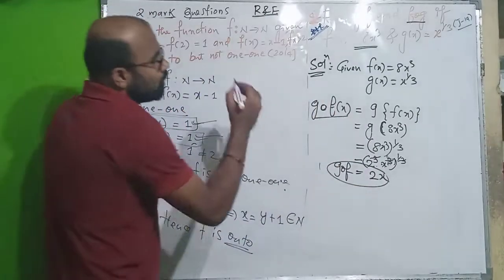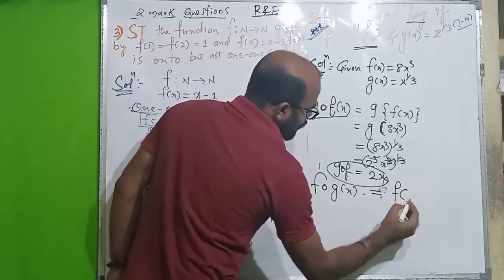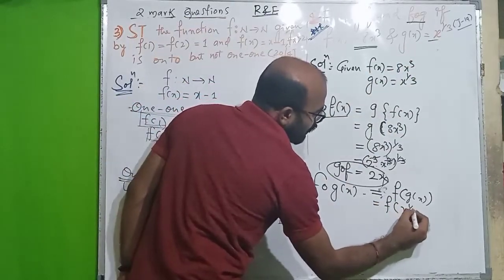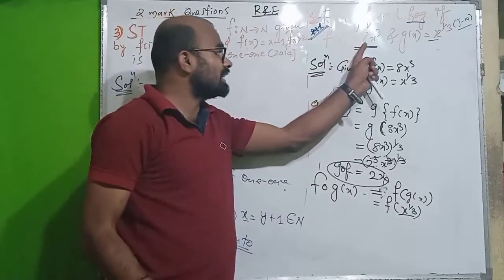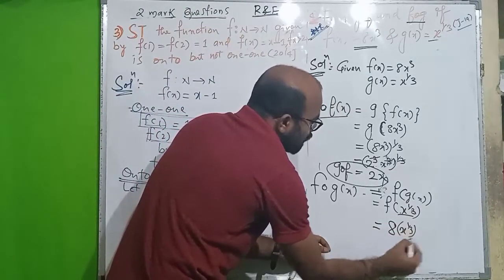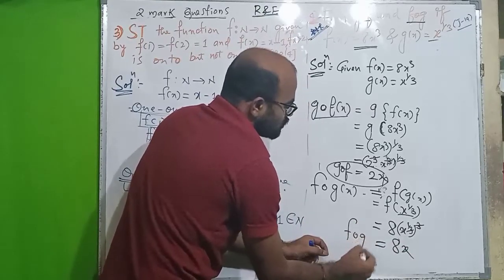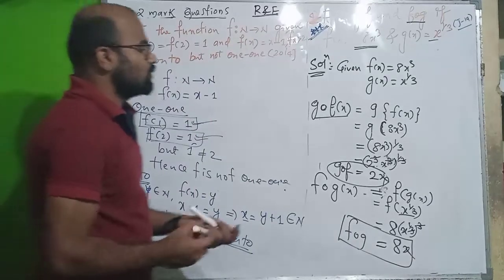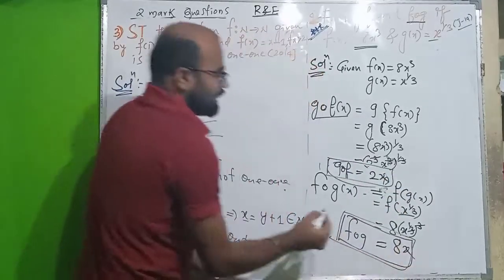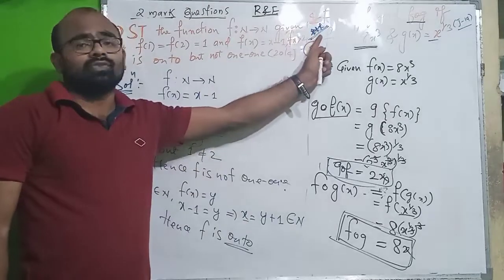For fog: f of g of x equals f of x to the power 1 by 3 equals 8 times x to the power 1 by 3 cubed. Applying the power, this simplifies to 8x. So fog of x equals 8x. This is a very important question from the exam point of view.